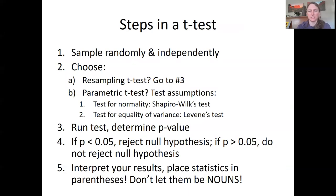So here's the steps for a t-test. First, sample randomly and independently. Second, choose a resampling test. Great, go to number three, a parametric test, and test for the assumptions of normality and equality of variance. If you pass those tests, then you can run your test, either run a resampling t-test or a parametric t-test. If your p-value from that test is less than 0.05, reject the null hypothesis. The means are not equal. If the p-value is greater than 0.05, you cannot reject the null hypothesis, and the means are equal to one another. You would then interpret your results and place your statistics in parentheses. Don't let them become nouns in your sentences. Not okay.